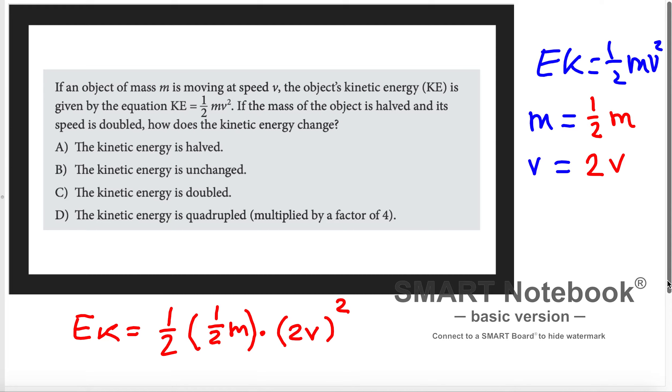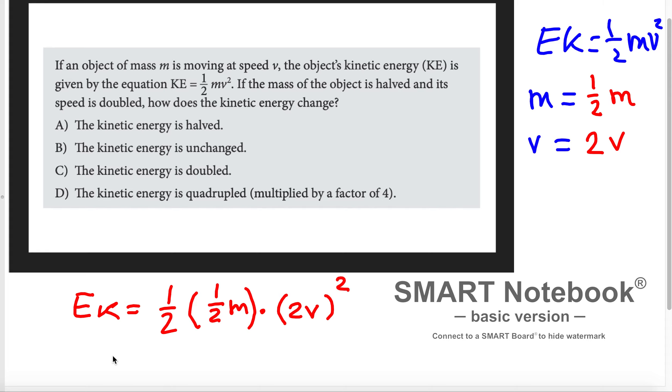Now what we're going to get here - if we simplify this equation a little bit, the kinetic energy is going to be equal to 1/2, and 1/2 times 1/2 is 1/4 m. And 2 squared is 4v squared.